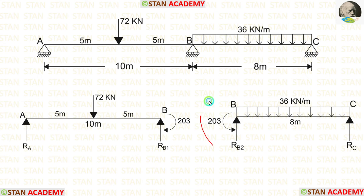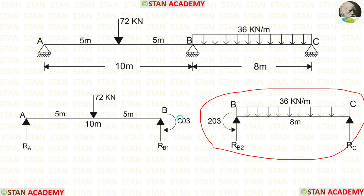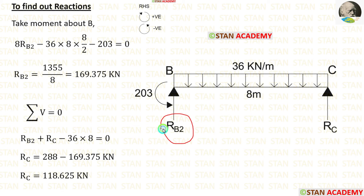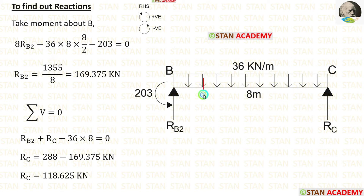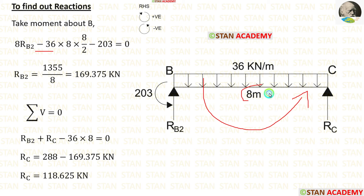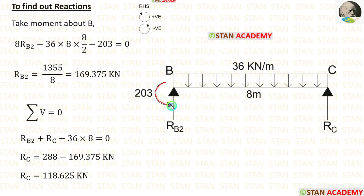Now let us take span BC and find the reactions. First, let us calculate RB2 by taking moments about C. The vertical reaction RB2 acts towards point C in the clockwise direction, so it is positive with a distance of 8 meters, giving 8RB2. The UDL acts towards point C in the anticlockwise direction, so it is negative. For the UDL, we multiply the load with the distance and half distance — distance is 8 meters and half distance is 8/2. The moment is anticlockwise, so it is negative. Finally, we are getting RB2.